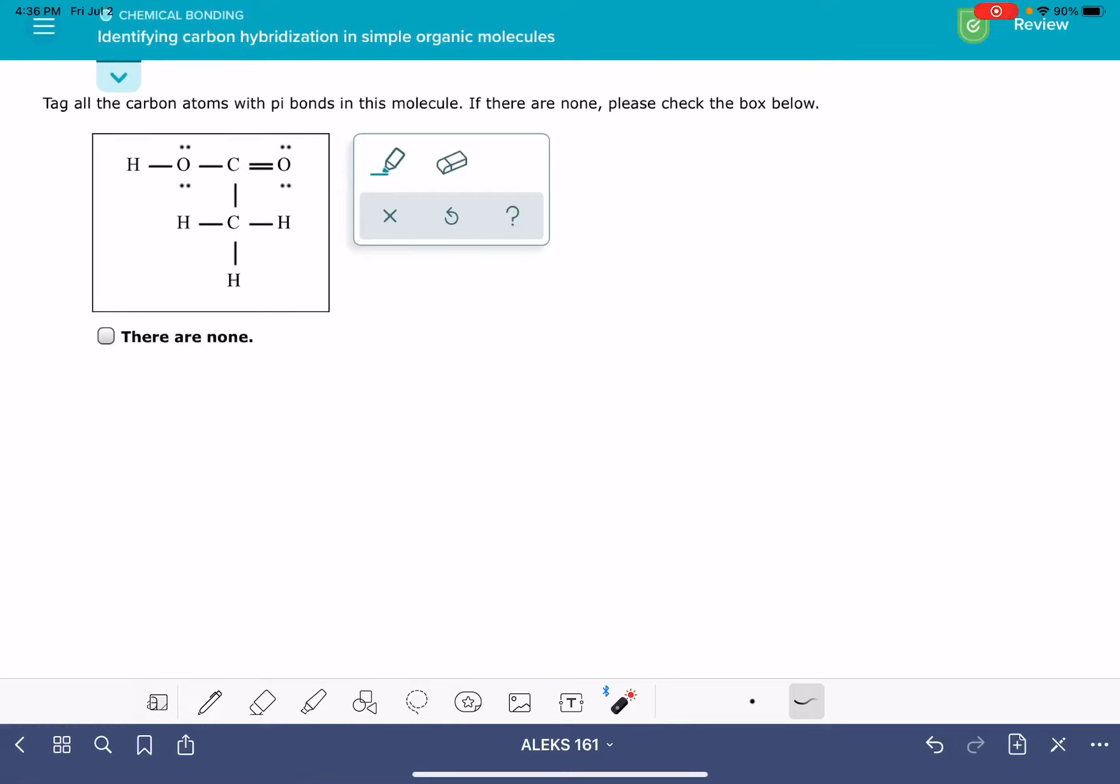In this video, I'll show you how to solve the Alex problem called identifying carbon hybridization in simple organic molecules. This problem is asking us to tag all of the carbon atoms that have pi bonds.